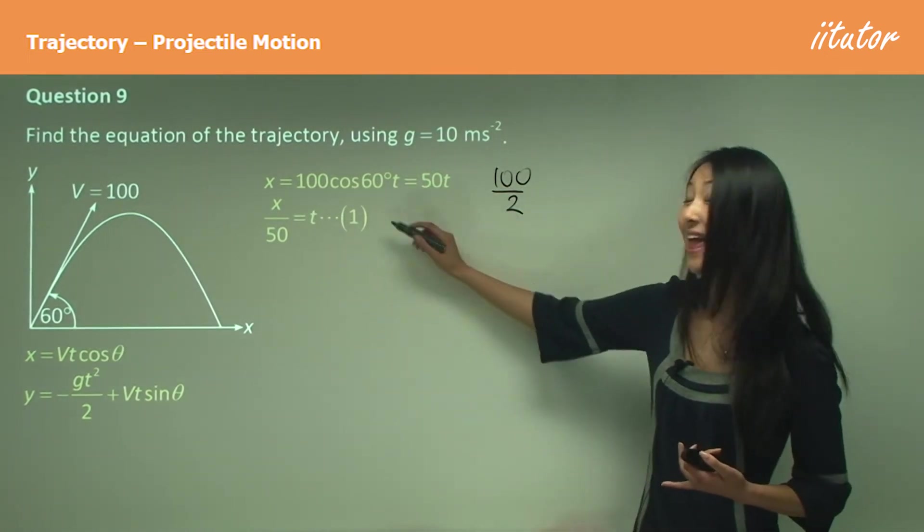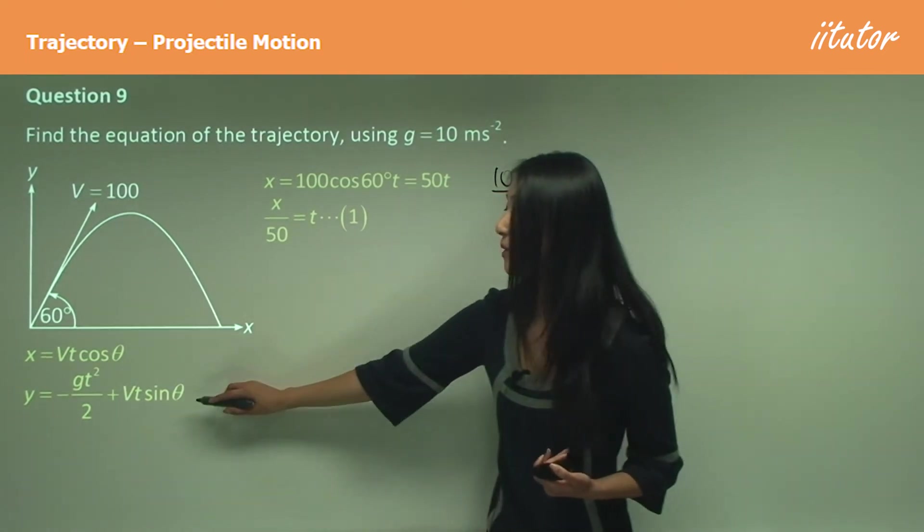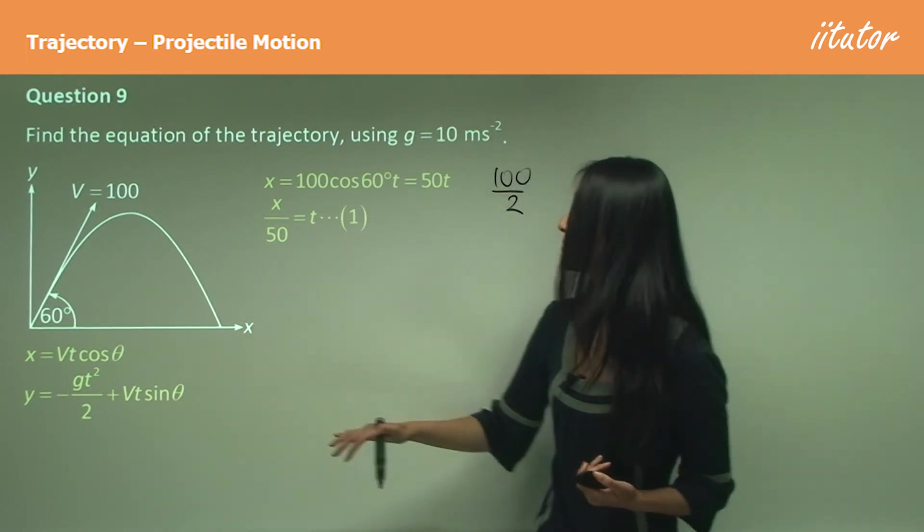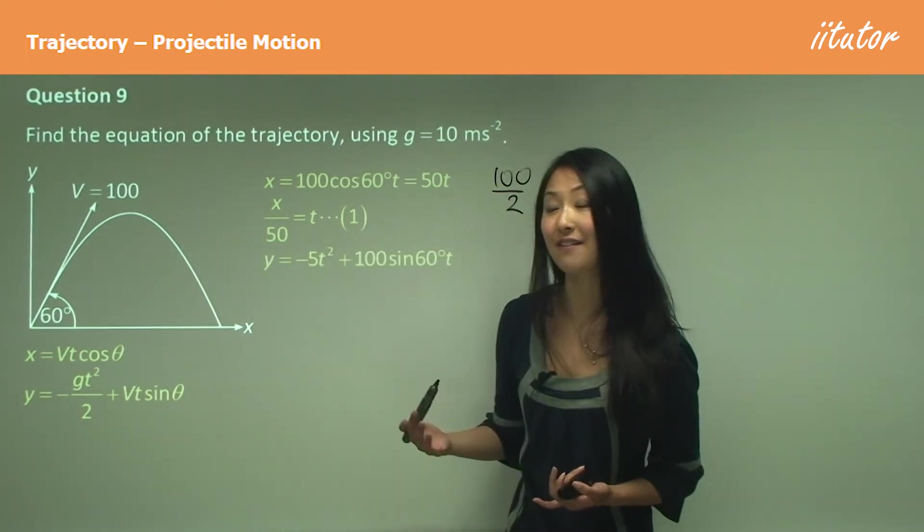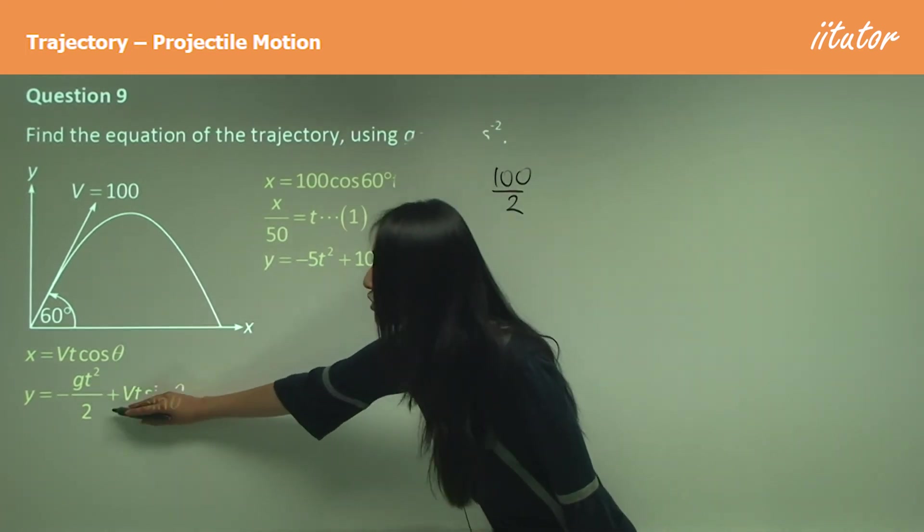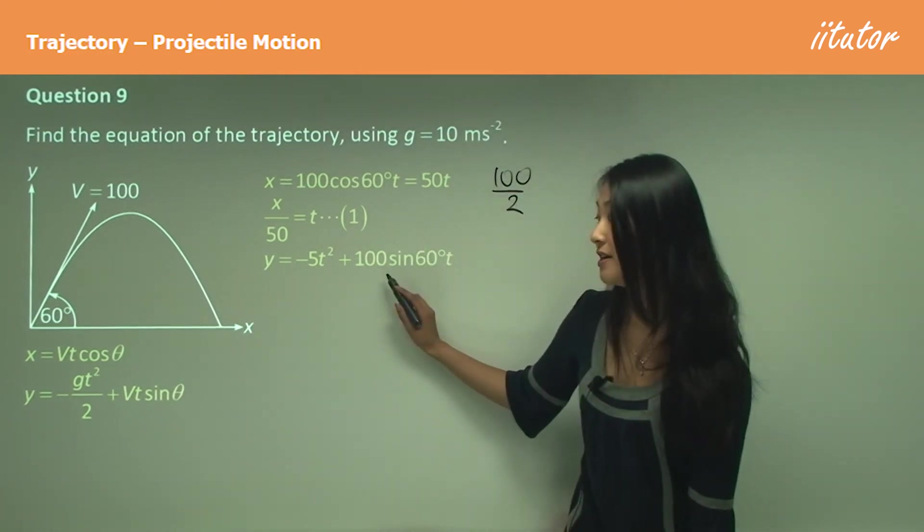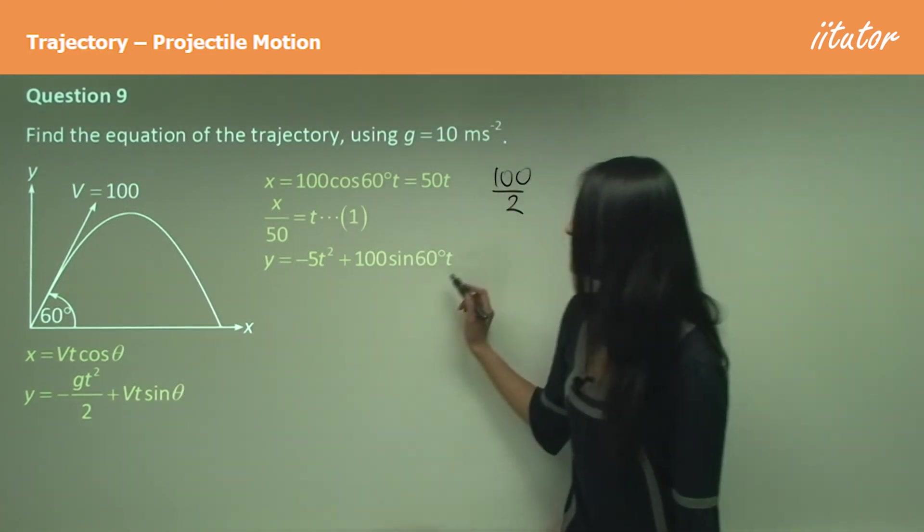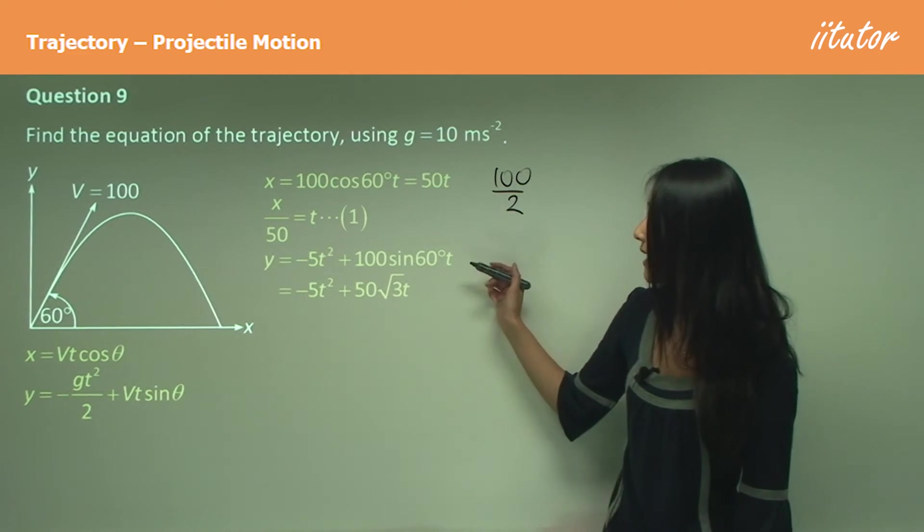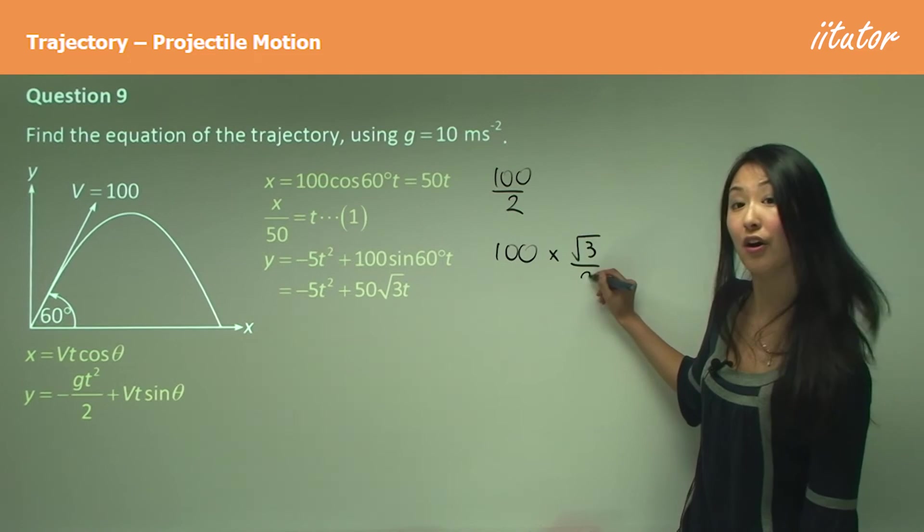Now let's move on to our vertical motion or vertical displacement. In this case, let's substitute in our various points. So g is 10, but 10 over 2 gives us that 5 there. Here our v is 100, and θ is 60 degrees. Sin 60 degrees that gives us square root 3 over 2, and that 2 cancels with 100 to give us 50 square root 3 there.